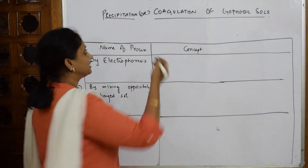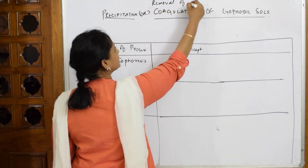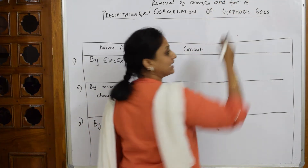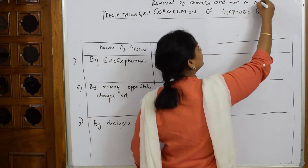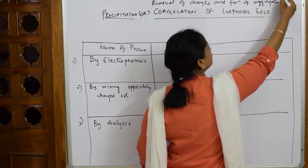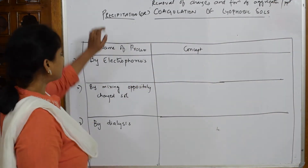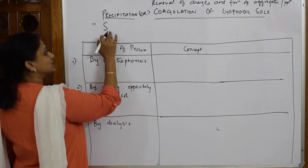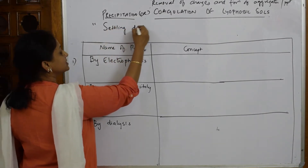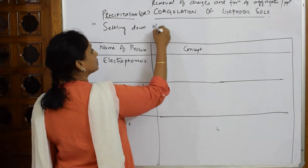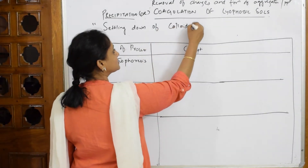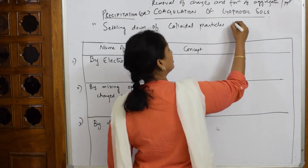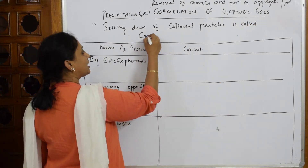In simpler words for the exam: coagulation is the removal of charges and formation of aggregates - aggregates means precipitate. The keyword for the exam is: coagulation is the settling down of colloidal particles. Settling down of colloidal particles is called coagulation or precipitation.